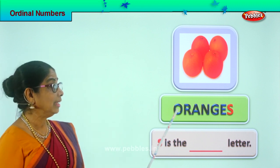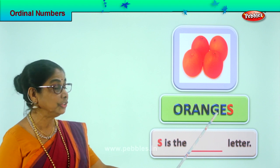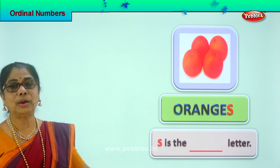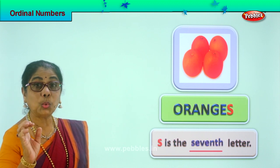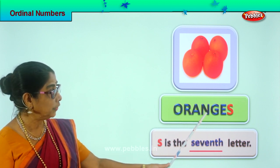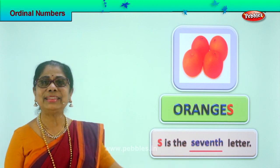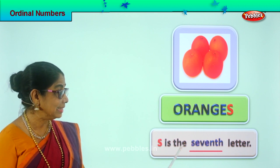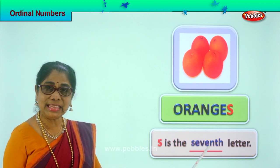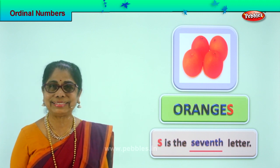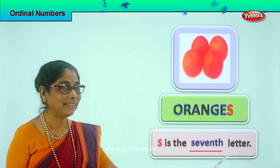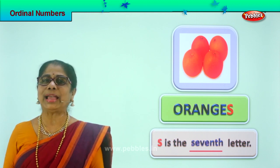Look at the spelling of oranges: O-R-A-N-G-E-S. Now, which letter is colored? The last letter — S. What is the position of letter S? First, second, third, fourth, fifth, sixth, seventh — S is the seventh letter. Spell seventh: S-E-V-E-N-T-H. Seventh. Read the full sentence: S is the seventh letter.